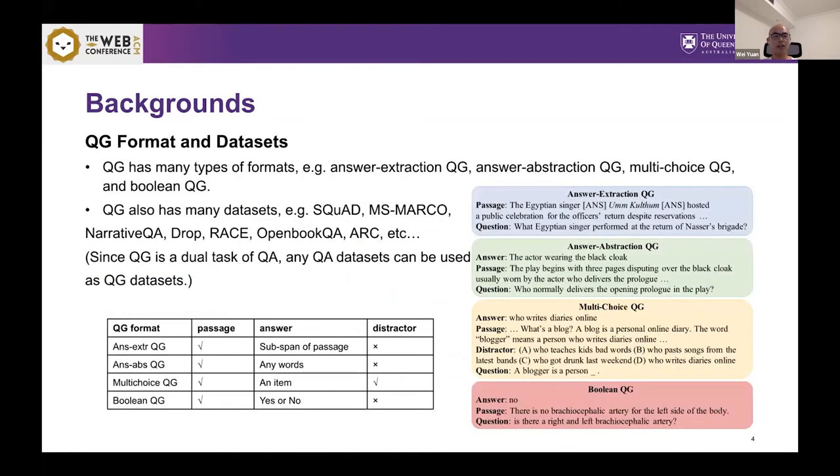We have many QG formats like answer extraction QG, answer abstraction QG, multi-choice QG and Boolean QG. Answer extraction QG means that the answer must be a subspan of the given context and answer abstraction QG doesn't have such requirement. Multi-choice QG is a quiz style QG and Boolean QG requires the answer be yes or no. Different QG formats have different components and they have different requirements for each component.